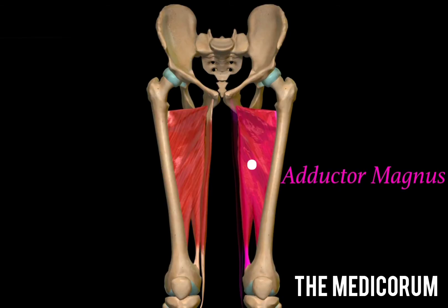Whereas the ischial head of adductor magnus, or the hamstring part of adductor magnus, is the fourth muscle. Hence, we saw all four muscles included in the hamstring group.